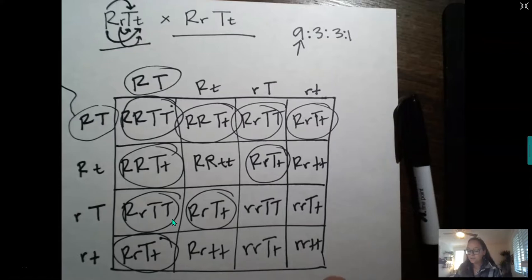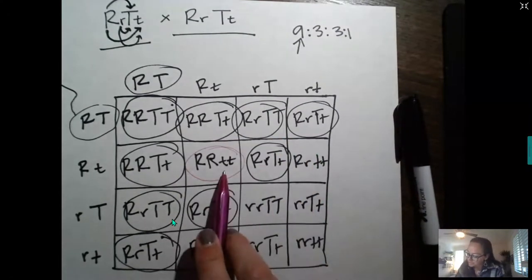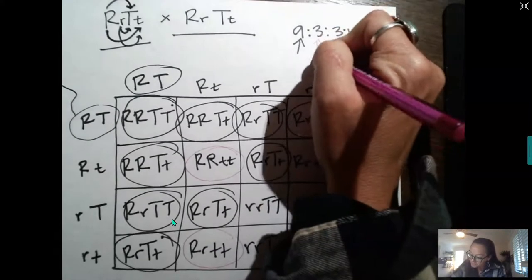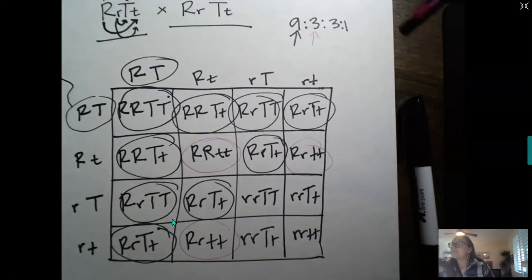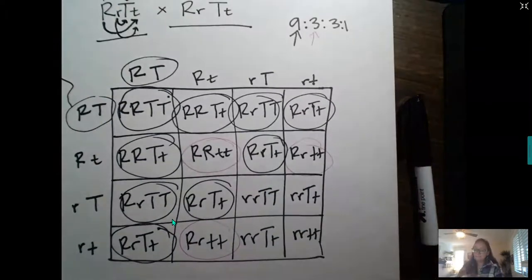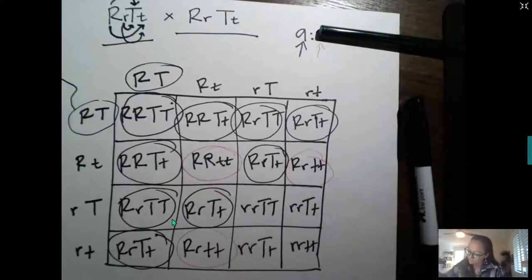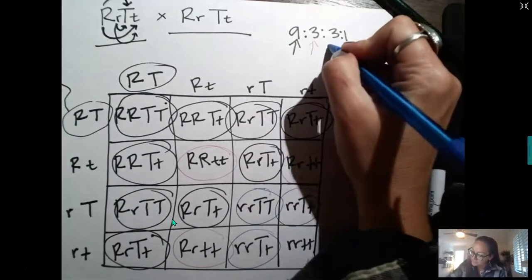Now I'm going to look for individuals that are dominant for the R trait, but recessive for the T trait. So dominant for the R trait and recessive for the T. I find that there are 3 of those. And then I'm going to look for individuals that are recessive for the R trait, but dominant for the T. And that's where this 3 comes from.